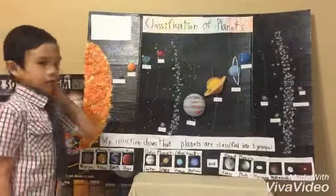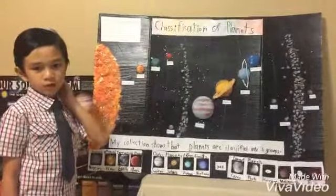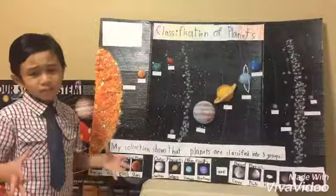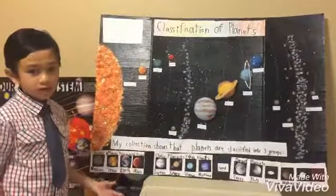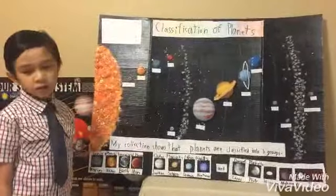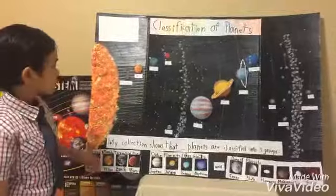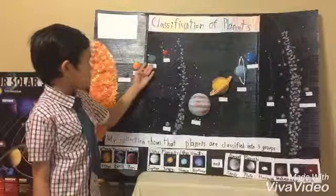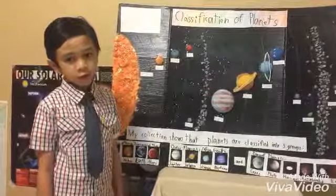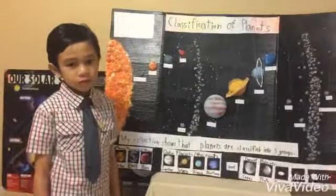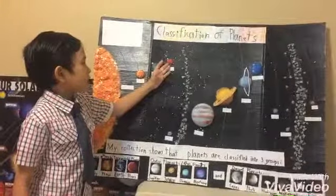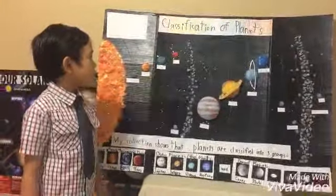Mercury was named after the Roman god, the messenger of the Roman gods. Venus was named after the Roman goddess of love and beauty. Earth was named from an English and German word meaning ground. Mars is named after the Roman god of war.